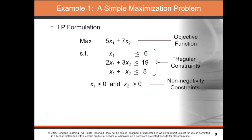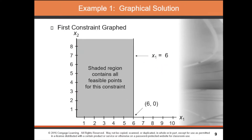Let's look at a simple maximization problem. The objective function is 5x₁ plus 7x₂, with the following regular constraints, and of course we must not forget about the non-negativity constraints.